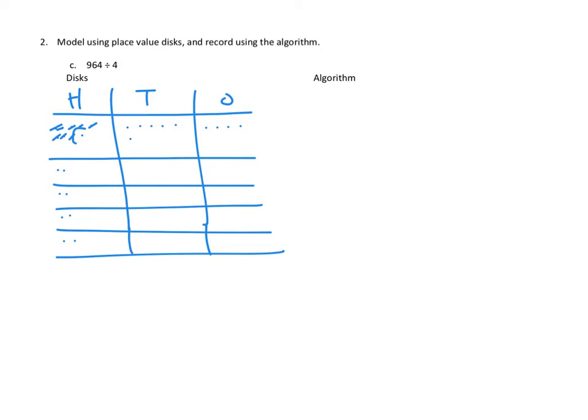So we are going to need to decompose that or unbundle it into tens. That's going to make us 10 more tens. So we're done with our hundreds.